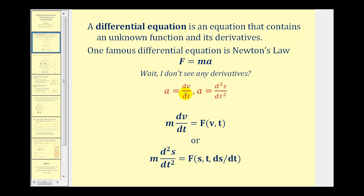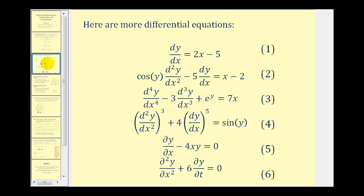So if we perform these two substitutions for a, we would have two differential equations: one with the derivative of the velocity function, and one with the second derivative of the position function. Let's look at some other differential equations as well. Notice equations one through four contain ordinary derivatives, and equations five and six contain partial derivatives, all of which are differential equations.